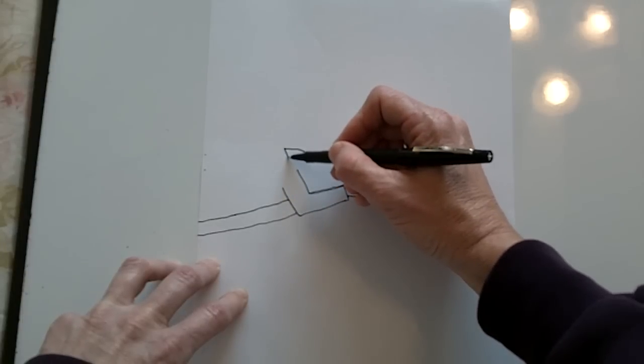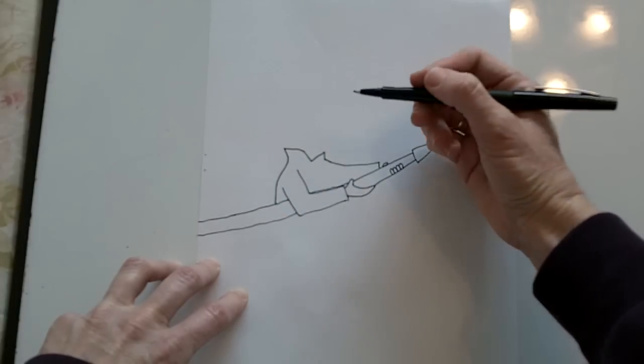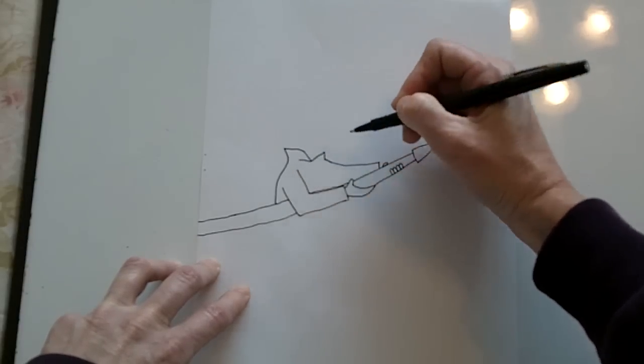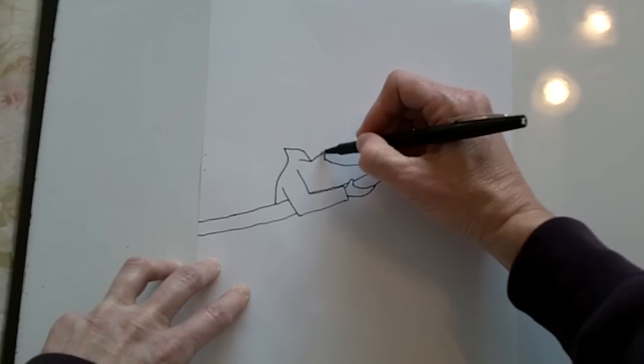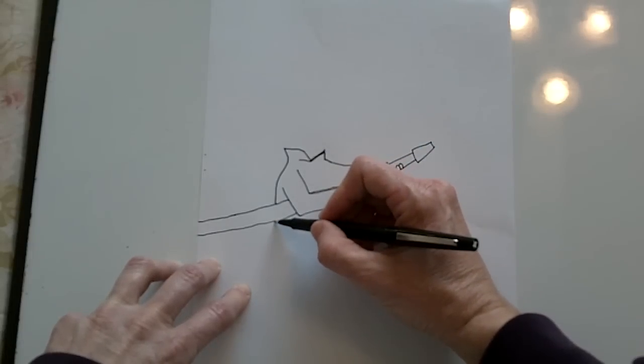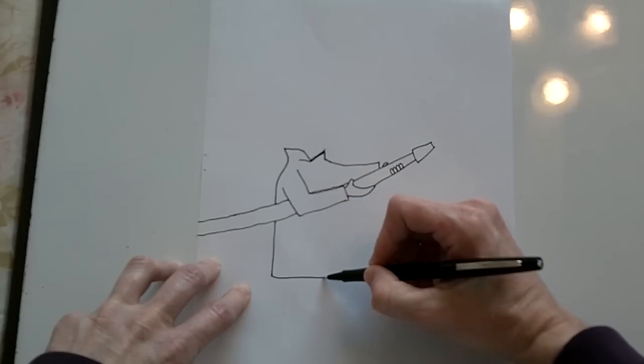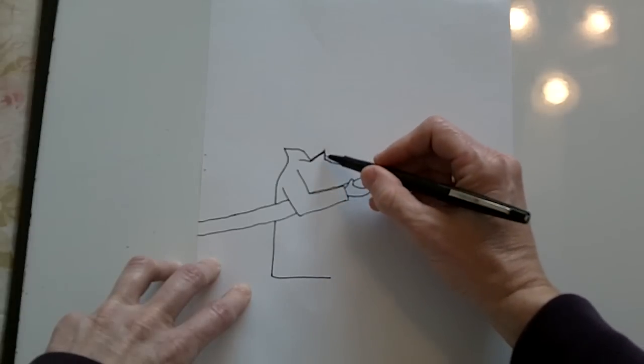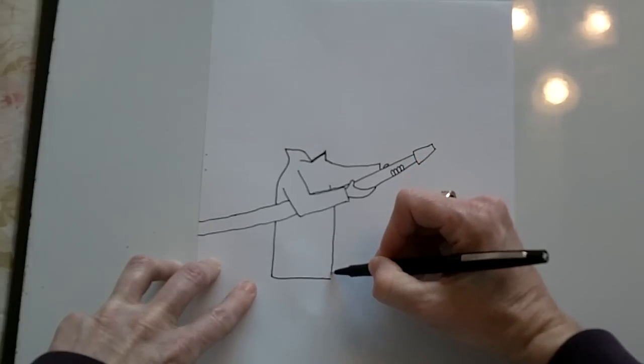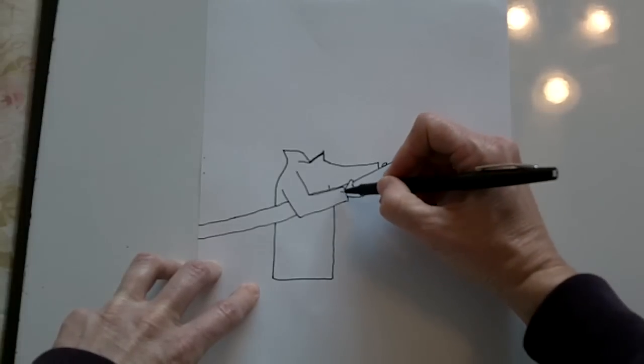And then it comes in and goes out and around and down, and then it comes down over a little bit. Right about here under this point is where the front of the jacket comes down. So that's his jacket and he has stripes.